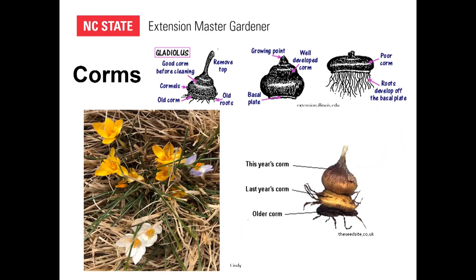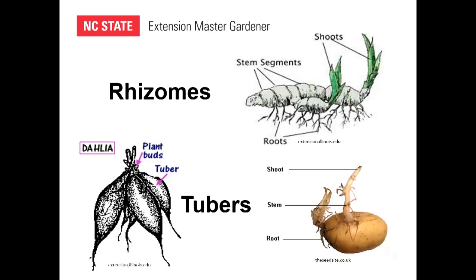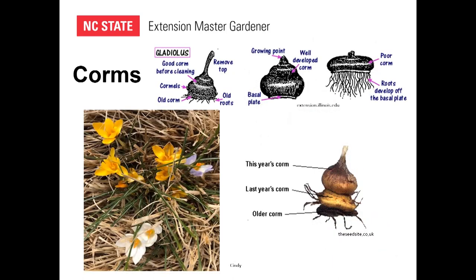Now you get into corms — and that's really cool. This right here is last year's corm, and this is the corm before that, so they build on top of each other. People say their gladiolas work their way out of the ground — that's why, because they build on top of each other. Their roots do pull them down, but eventually that's one reason you need to dig them up and replant them. Adding mulch may help prevent that. This one is sort of flat and badly developed; you can see how nice and fat this one is — that's the way they're supposed to look.